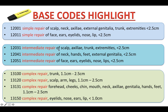Lastly, please highlight these complex repair base codes. 13100: complex repair, trunk, 1.1 to 2.5 cm. 13120: complex repair, scalp, arm, and legs, 1.1 to 2.5 cm. 13131: complex repair, forehead, cheeks, chin, mouth, neck, axilla, genitalia, hands, and feet, 1.1 to 2.5 cm. And 13150: complex repair, eyelids, nose, ears, and lips, less than 1.0 cm. Again, these are the base codes you need to highlight.